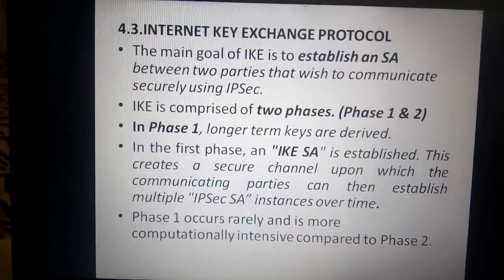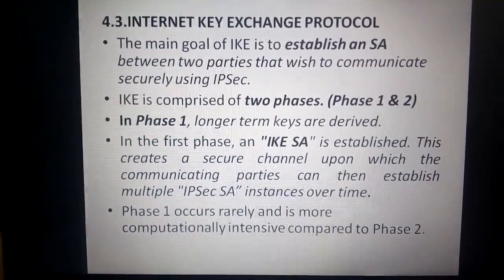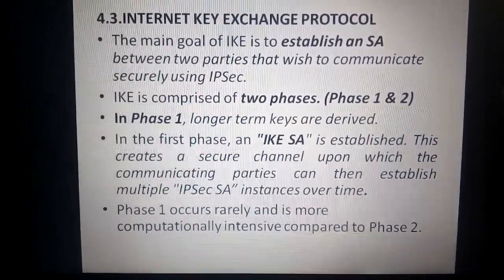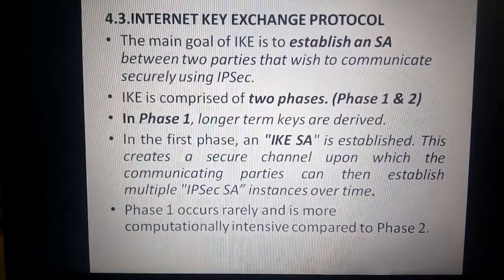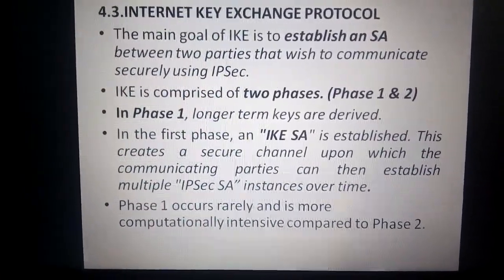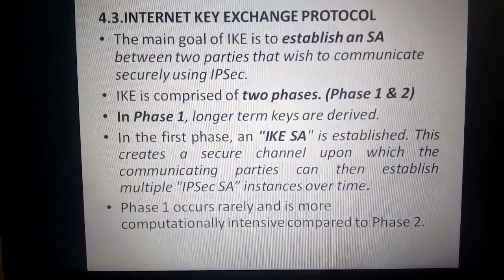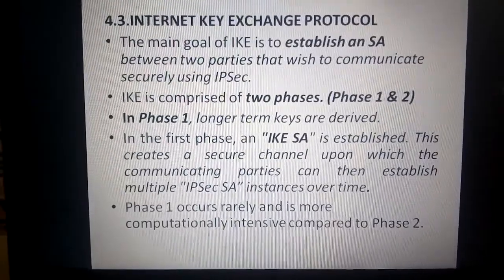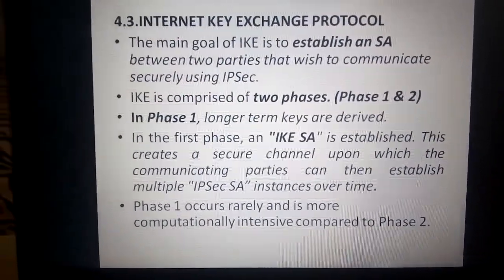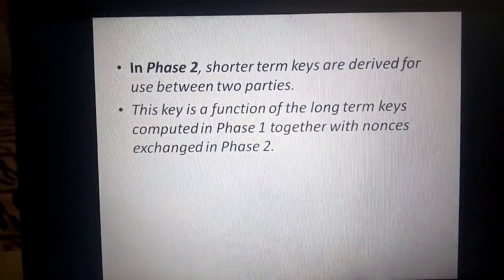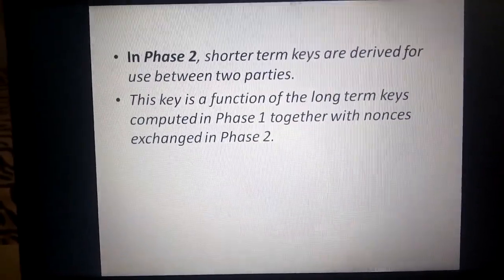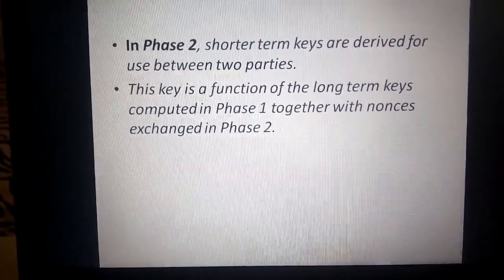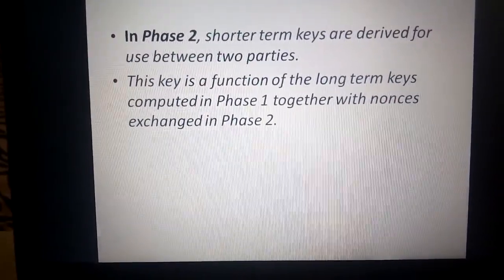In Phase 1, long-term keys are derived and an IKE secure channel is established, upon which communicating parties can then establish multiple IPsec SA instances over time. Phase 1 occurs rarely and is more computationally intensive compared to Phase 2. In Phase 2, short-term keys are derived for use between the two parties; these keys are a function of the long-term keys computed in Phase 1, together with nonces exchanged in Phase 2.